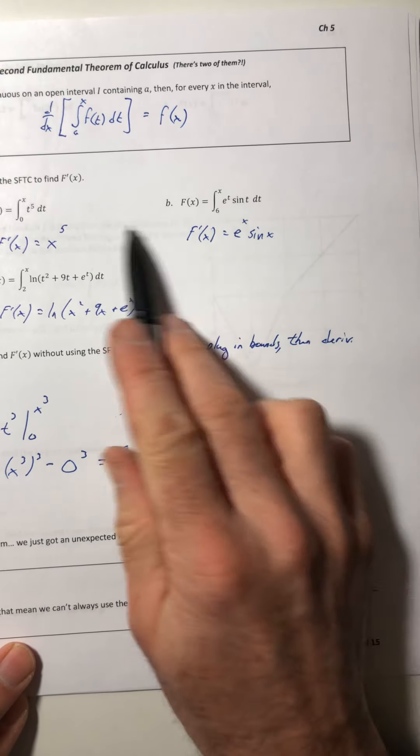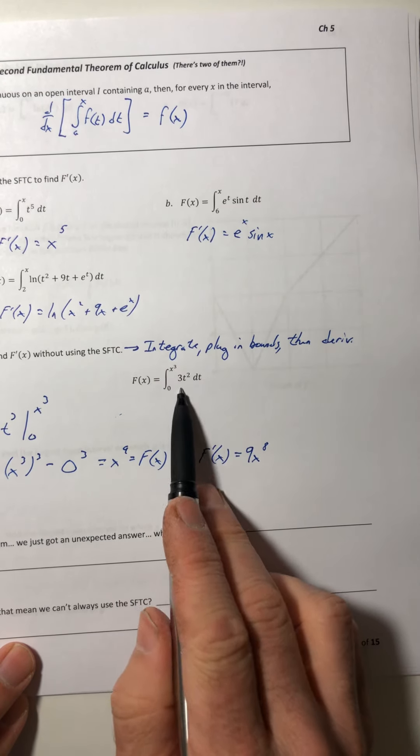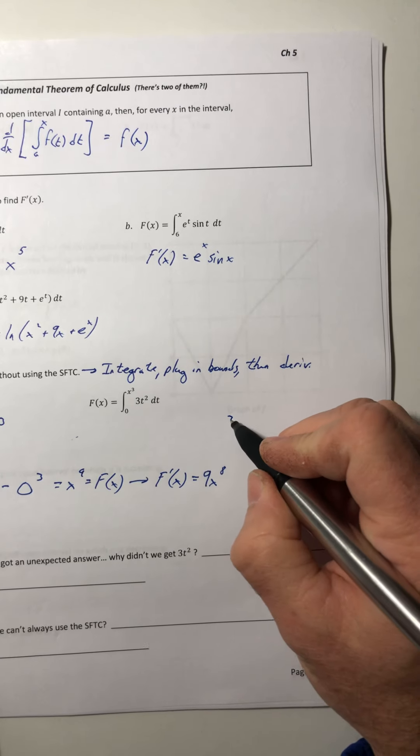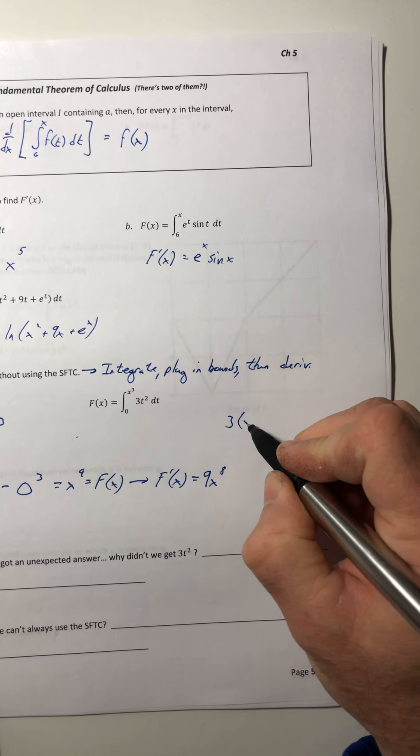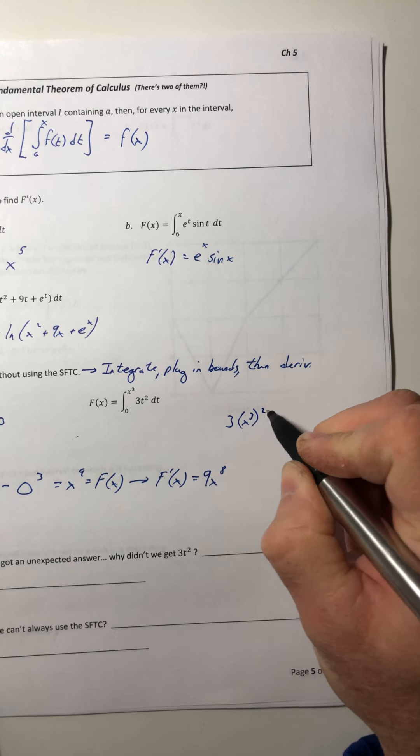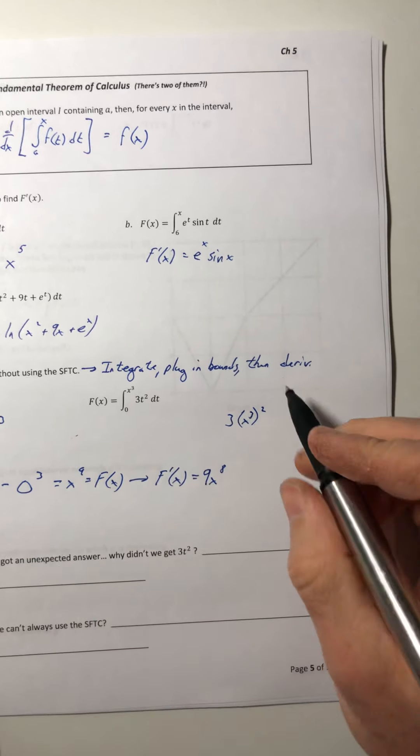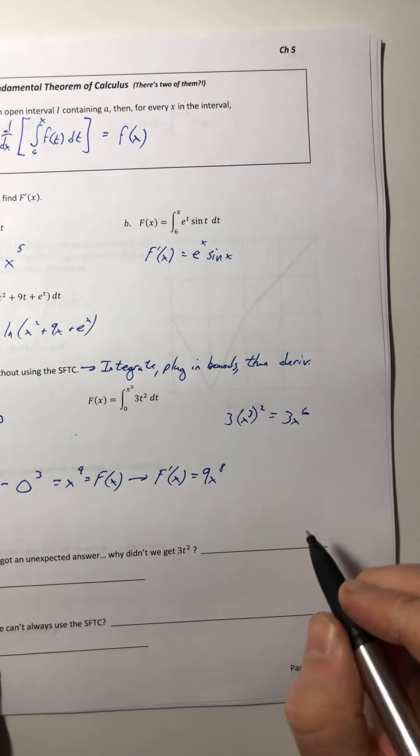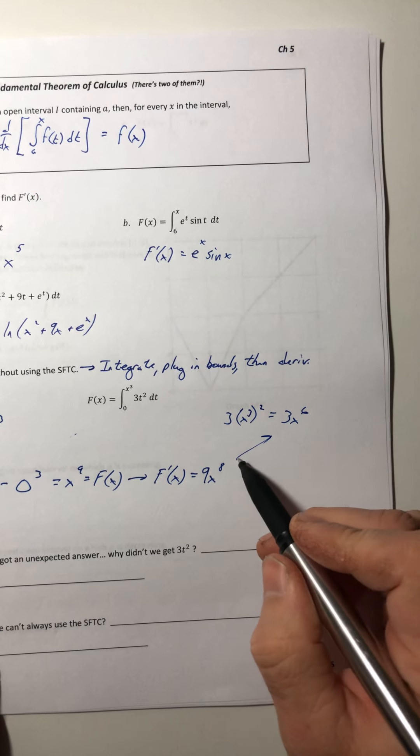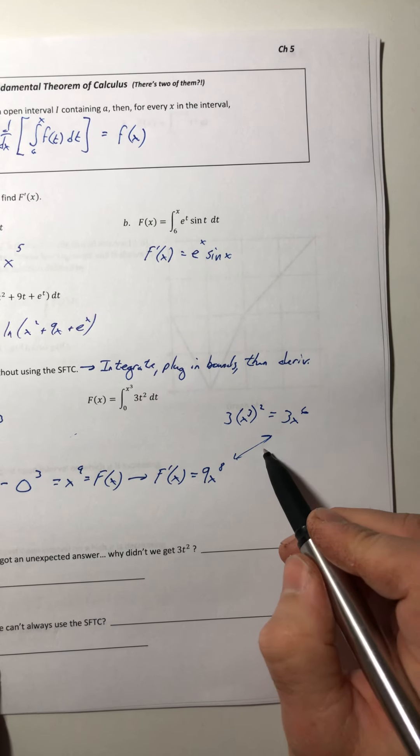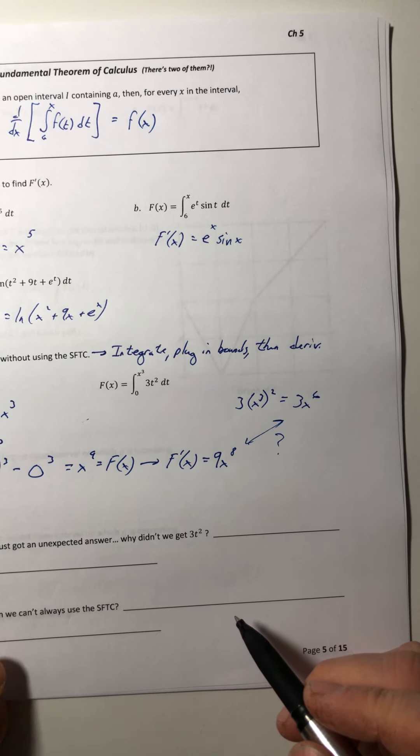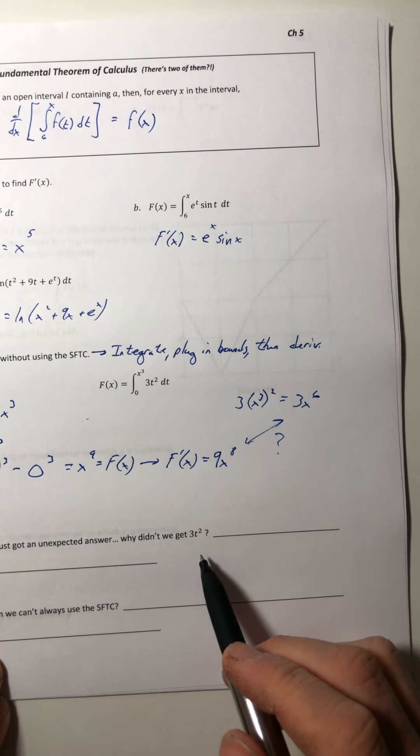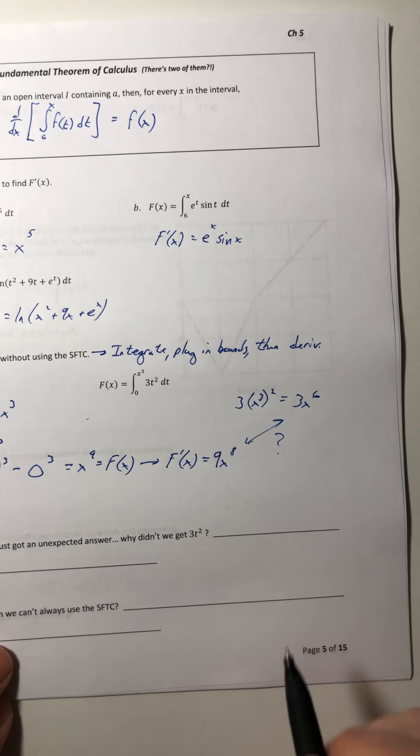So we got something totally different than if we would have just used that second fundamental theorem of calculus. Because if we followed the same process, we would have plugged in the bound for t, and we would have come up with a completely different answer. These two things don't match up. So why not?